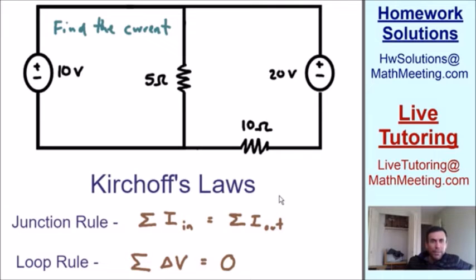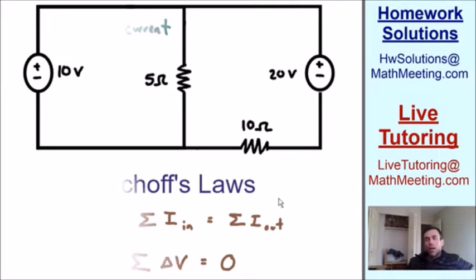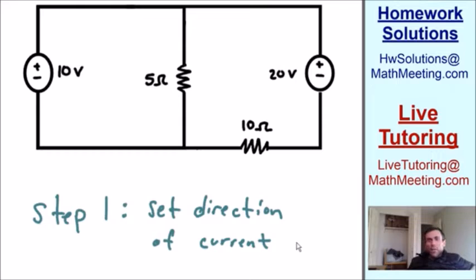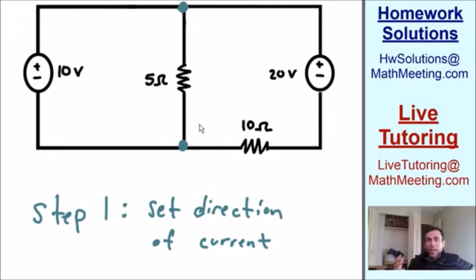Let's not waste any more time and get started. The first thing I like to do — step number one — is to set the direction of the current. Notice how we have these two junctions or nodes, and there's going to be a current that goes into these junctions and a current that comes out. We don't know the direction at the moment, so it doesn't matter which direction you point the current, because if you point the wrong direction, you'll just get a negative value later on, which indicates you need to point the current in the opposite direction.